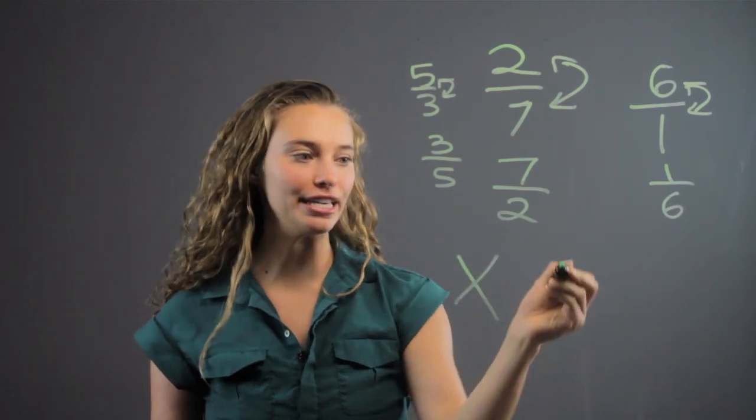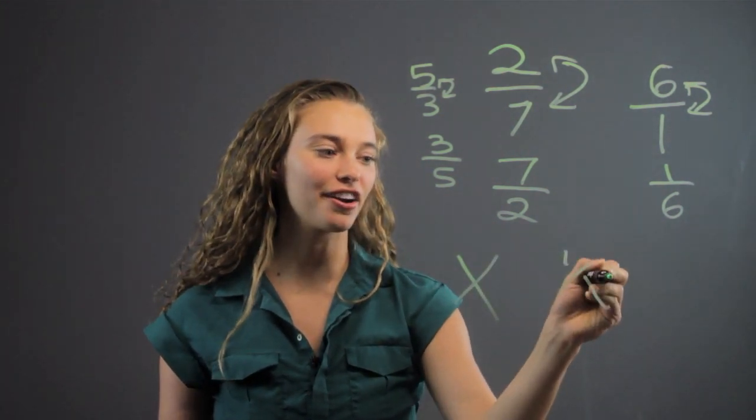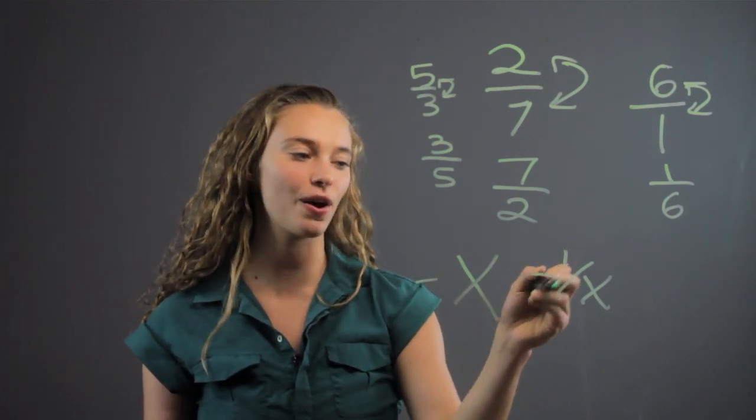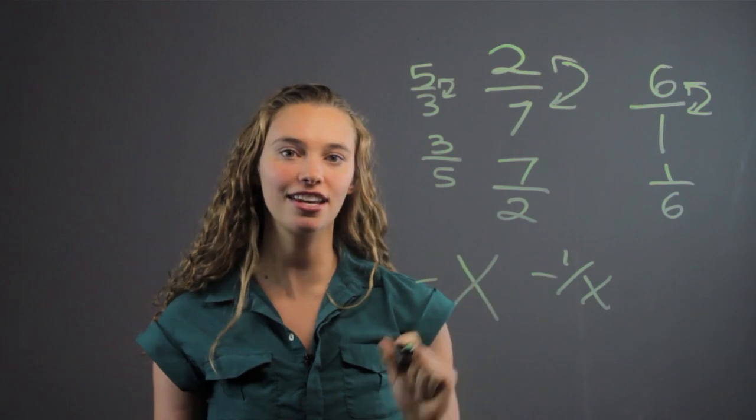So the reciprocal of x is always 1 over x. It's the same with negative numbers. The reciprocal of negative x is negative 1 over x. It just keeps the negative sign.